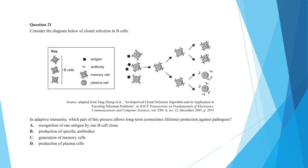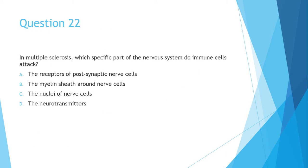Question 21 shows a diagram in which a range of B cells with different receptors are being exposed to an antigen. The B cell that has the correct receptor for the antigen then generates a production of B cells that carry that receptor. The question then asks, in adaptive immunity, which part of this process allows long-term protection against pathogens? And the answer here is the generation of memory cells. The name memory cells sort of gives it away and the vast majority of students got this correct. Question 22 asks, in multiple sclerosis, which specific part of the nervous system do immune cells attack? This is another straight knowledge recall question. And the answer here is B, which is myelin sheath around the nerve cells.